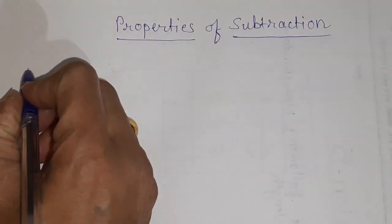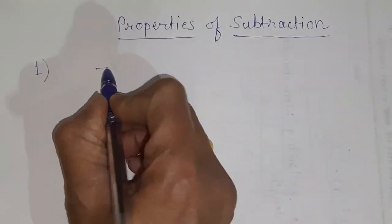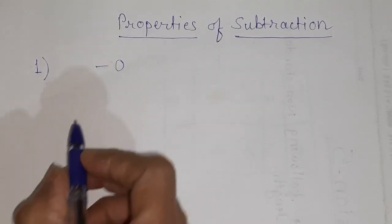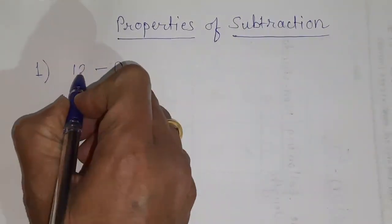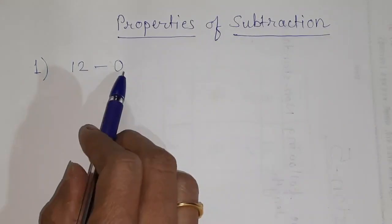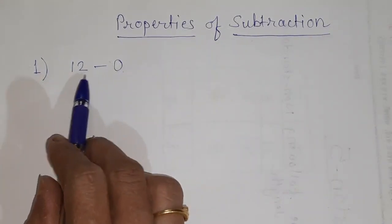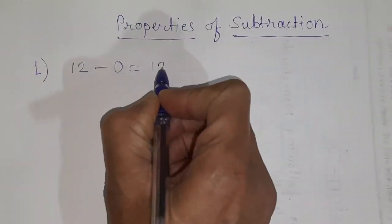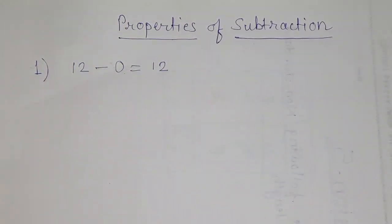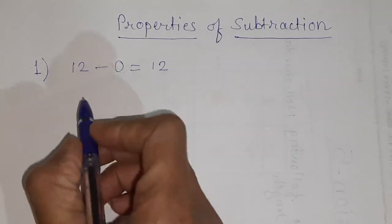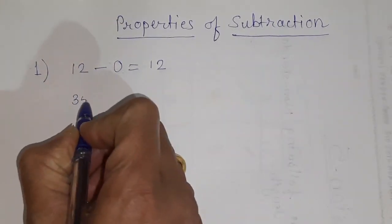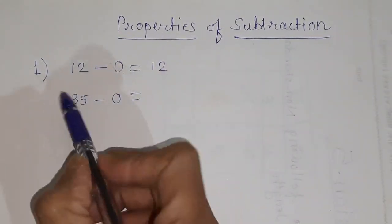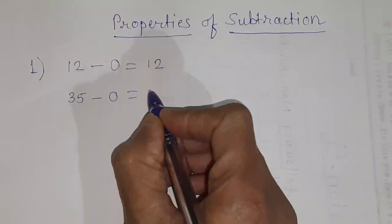First property is, when we subtract zero from any number. So, here I will take number 12. So, we are subtracting 0 from 12. Then we are getting same number as an answer. One more sum we'll do. We will take 35 minus 0. What we will get? The same number we will get as an answer.